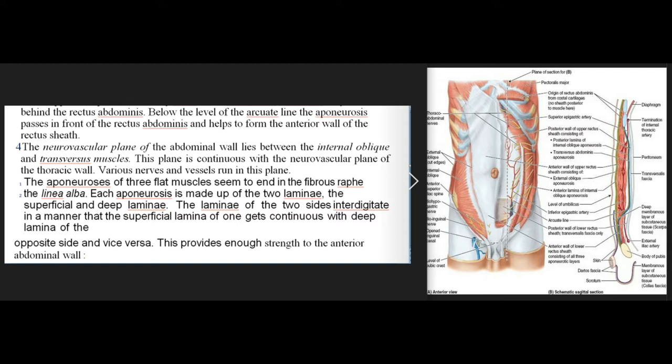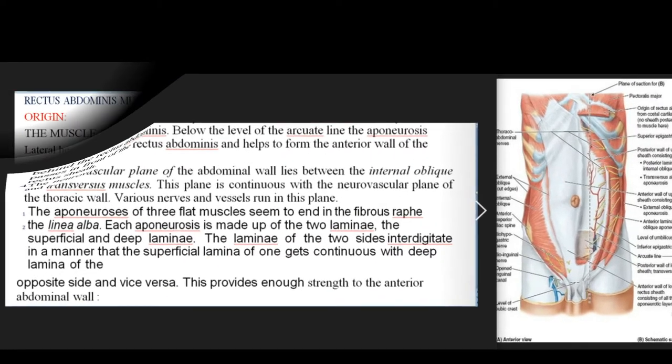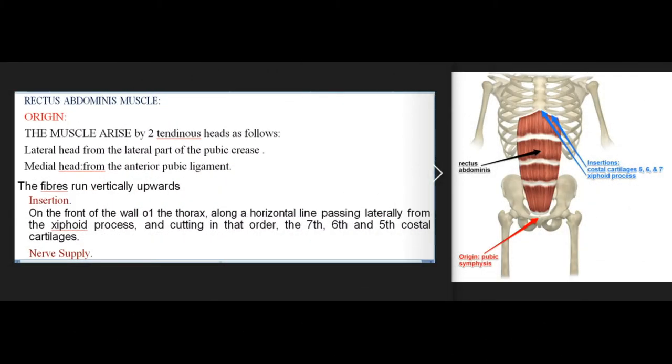The aponeuroses of the three flat muscles end in the fibrous raphe called the linea alba. Each aponeurosis is made up of two laminae, superficial and deep. The laminae of the two sides interdigitate such that the superficial lamina of one side becomes continuous with the deep lamina of the opposite side and vice versa, providing enough strength to the anterior abdominal wall.